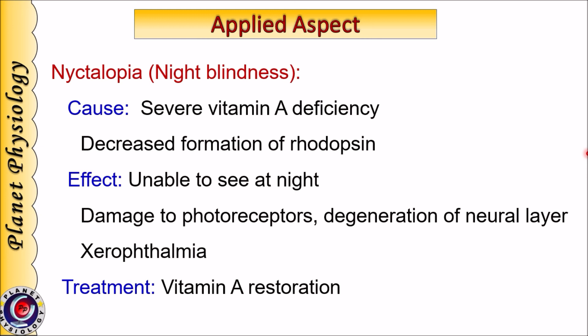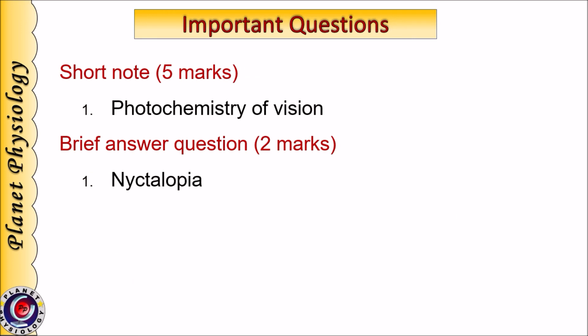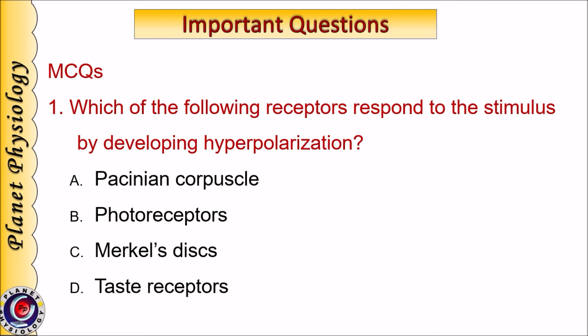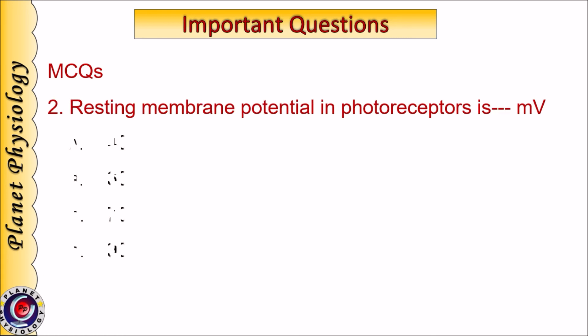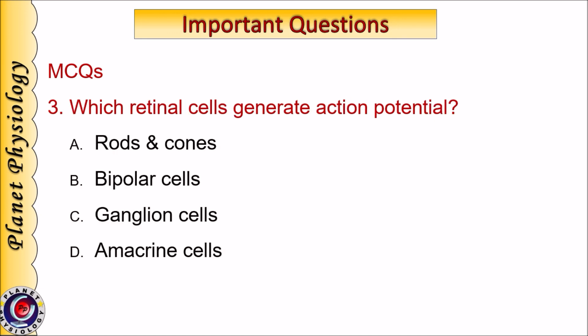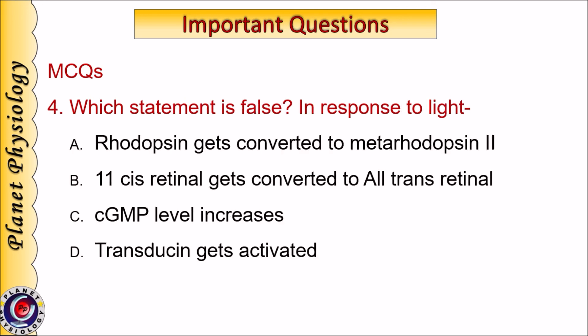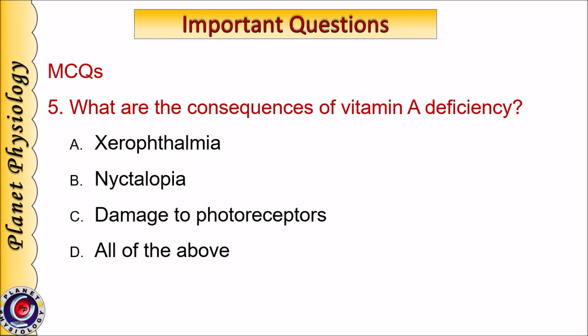Here we finish with the topic of photochemistry of vision. Photochemistry of vision is a commonly asked short note, and nyctalopia is asked as a brief answer question. Various MCQs can be formulated on this topic, such as: Which receptors respond to a stimulus by developing hyperpolarization? What is the resting membrane potential of photoreceptors? Which retinal cells generate action potentials? Which statement is false — in response to light, rhodopsin is converted to metarhodopsin-2; 11-cis retinal is converted to all-trans retinal; cyclic GMP levels increase; or transducin gets activated? What are the consequences of vitamin A deficiency?